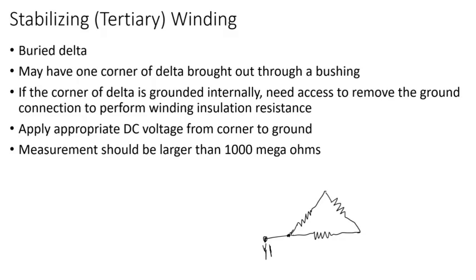In this video I'll talk about stabilizing winding insulation resistance, sometimes referred to as tertiary. This winding is not connected to load, typically a buried delta connected with all terminals not brought out except one brought out for grounding purposes. May have one corner of the delta brought out through a bushing.